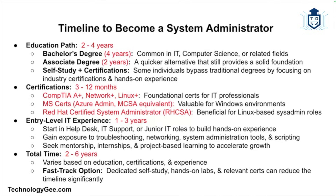The time it takes to become a sys admin can vary based on education, experience, and certifications. On average, the education path takes about two to four years — many sys admins start with a bachelor's degree in IT or computer science taking about four years, or an associate's degree taking about two years. Self-study with certifications is also a viable route, with industry certifications like CompTIA A+, Net+, Linux+, or Microsoft certifications typically taking a few months of studying and testing.